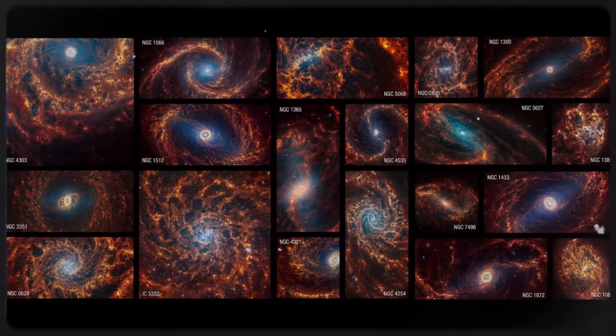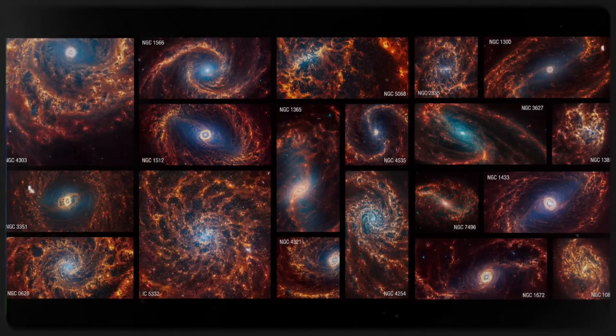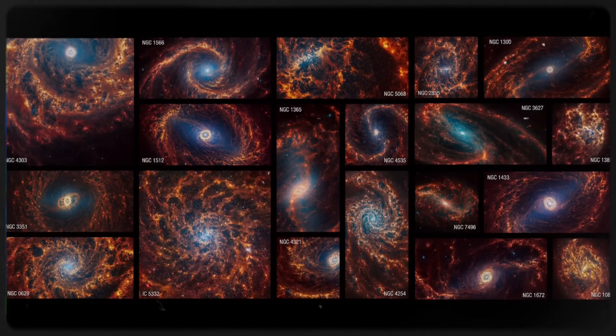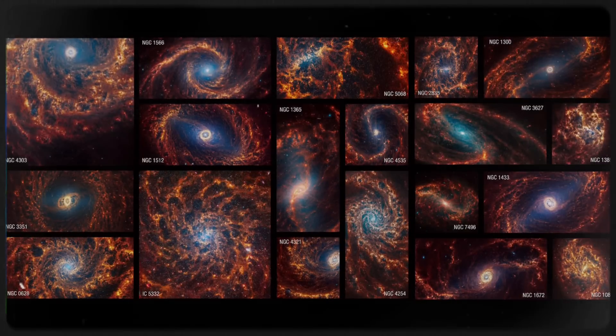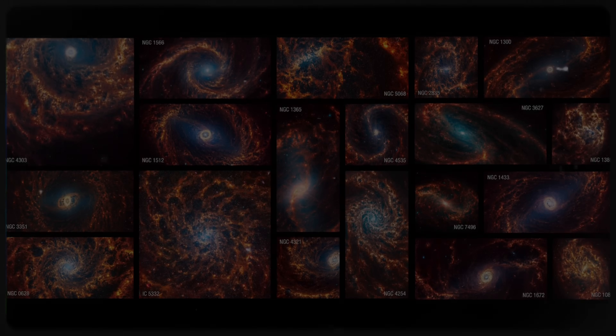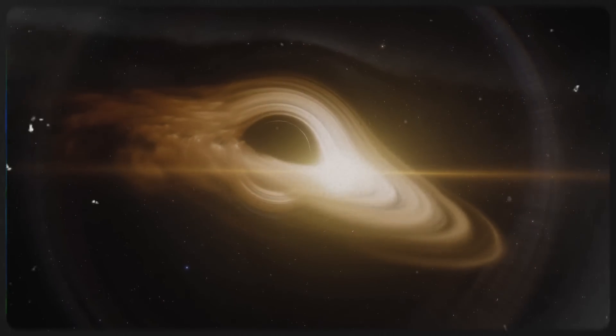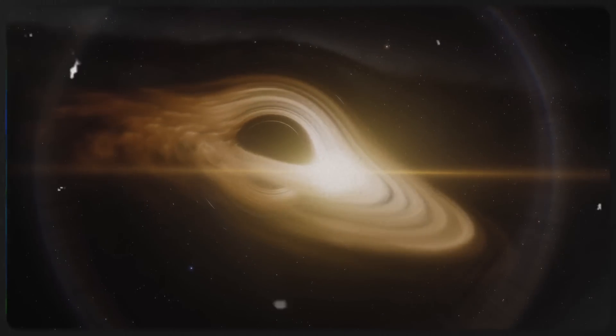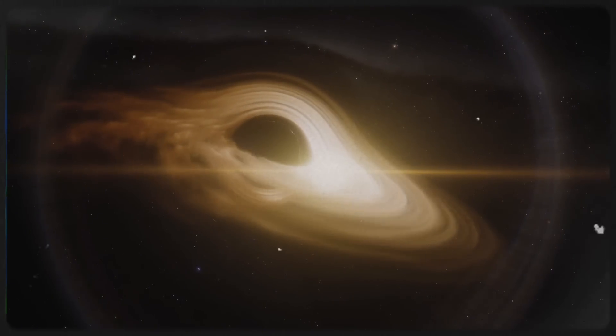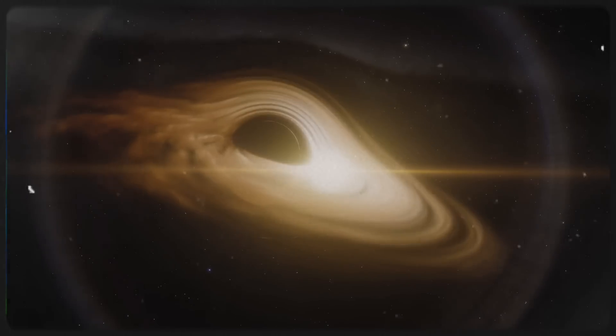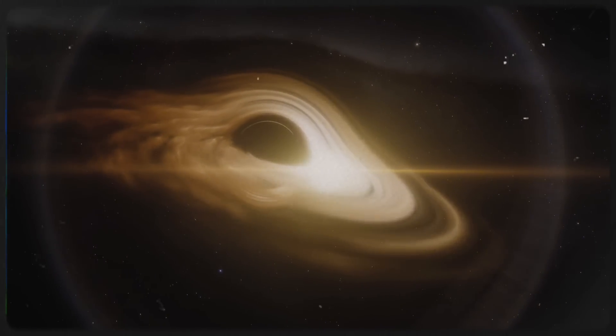Scientists aimed Webb's near-infrared camera at 19 galaxies within this ancient cluster, situated a staggering 11 billion light-years away. Their findings suggest that galaxies dominated by colossal black holes are experiencing a slowdown in star birth, whereas those without them remain active nurseries of new stars.